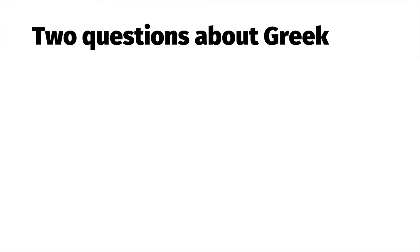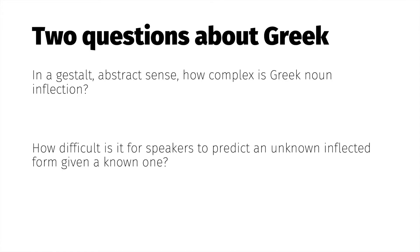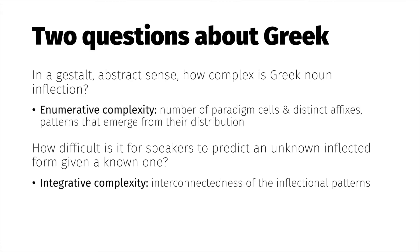There are two questions we'll be addressing about Greek. First, what is the gestalt, abstract complexity of the language's inflection system? Second, what consequences does that paradigmatic organization have for Greek speakers who need to predict an unknown word form? In Ackerman and Malouf's terms, these questions address respectively enumerative complexity and integrative complexity — concepts related to the number of inflectional contrasts the language requires, or their interconnectedness and mutual predictability.